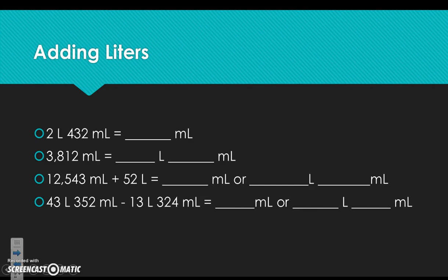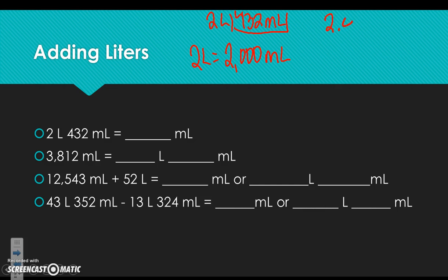More conversions: 2 liters 432 milliliters — how many milliliters total? 2 liters equals 2,000 milliliters, then add the 432: 2,000 plus 432 equals 2,432 milliliters.